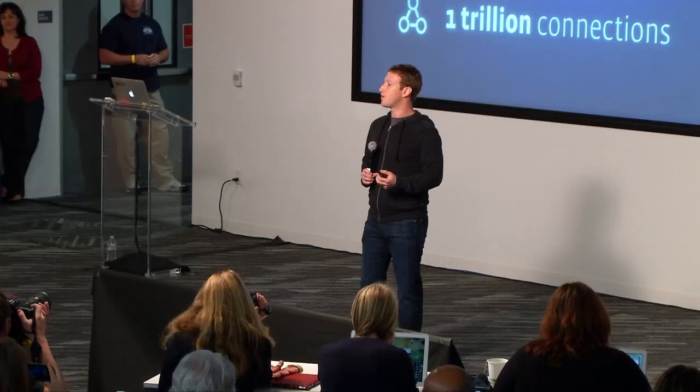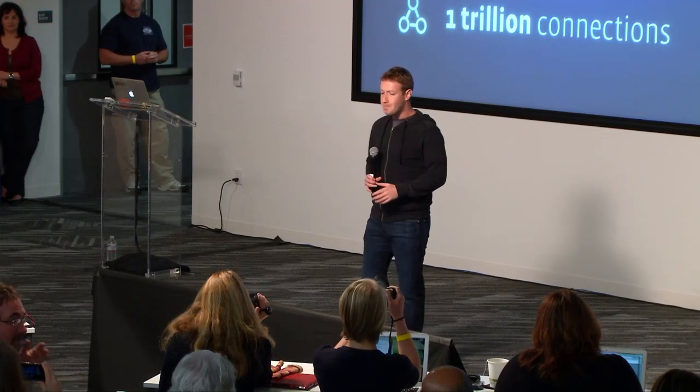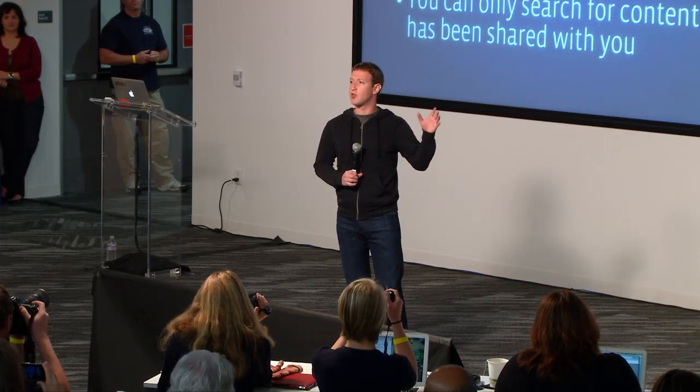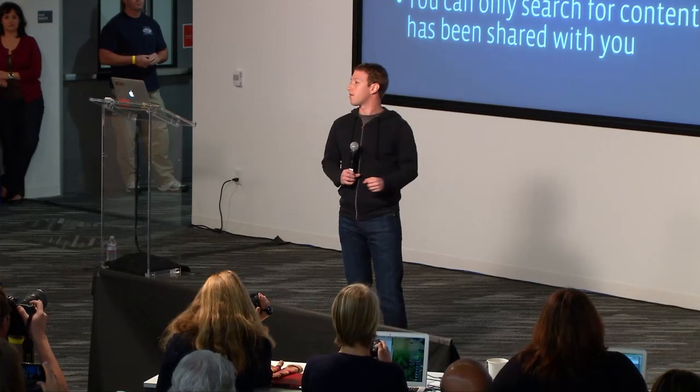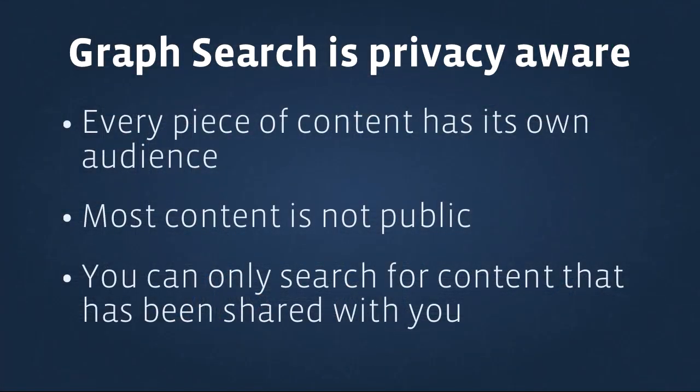There are more than a trillion connections in total in this map of the graph with billions and billions of new ones every day. There are lots of different kinds of connections — friend connections, follow connections, group connections, event connections, photo tags, locations, likes, comments, and more. Indexing all this content and making it retrievable instantaneously is a really hard technical problem we've been working on for a long time.